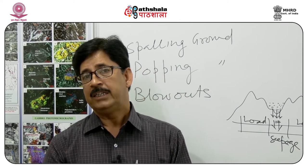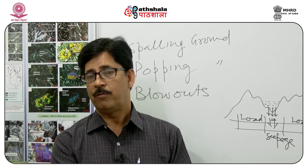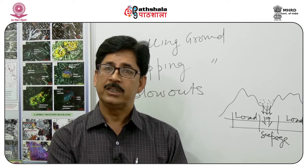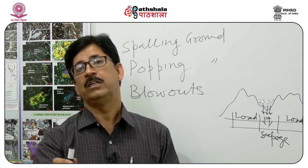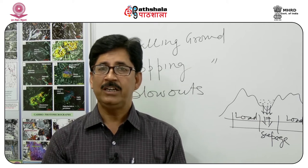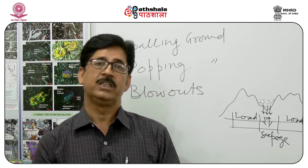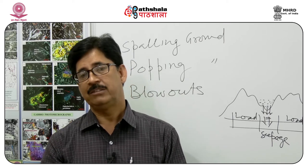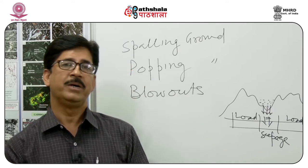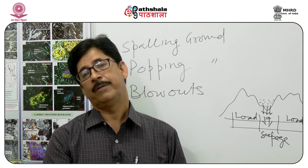If we are making a tunnel through any hill and we go close to the slope, the problem of rock mass movement will be very high. If we make the tunnel through the middle of the hill, the tunnel length will increase. So we have to see all permutations and combinations to ensure safety from surface processes related to landslides and mass movement, while also ensuring the tunnel length is not very long — so we can optimize our economy.